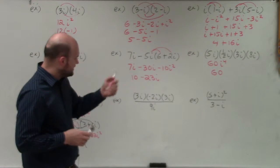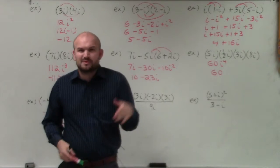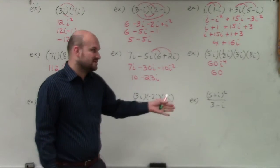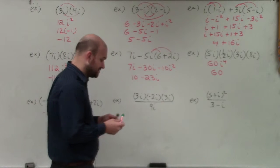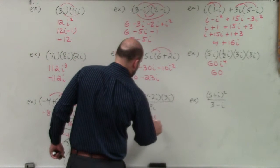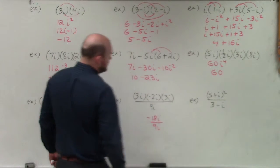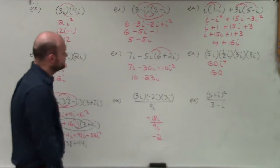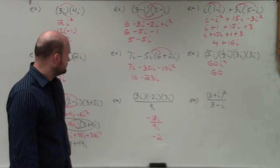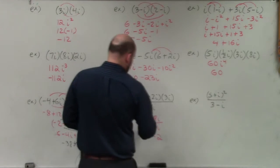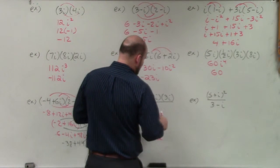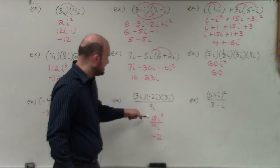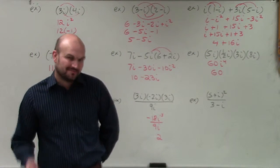In this next example, I have a little bit of division. Before we even rationalize the denominator, let's simplify our numerator. 3 times 3 is 9, times negative 2 gives me negative 18i. So I have negative 18i over 9i — wait, I made a mistake. This becomes i cubed. i cubed is equivalent to negative i. So negative i times negative 18 makes that a positive, giving me positive 2. Be very careful — I was trying to go a little too quickly there.